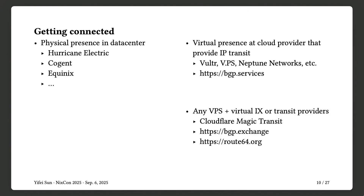For getting connected, you either need a physical presence in a data center like HE, Cogent, or Equinix, or you can go with VPS providers that offer BGP sessions for a fee or for free — there's a list on the BGP.Services website. Or you can use any VPS with a virtual internet exchange or transit provider and set up a direct connection to their router.